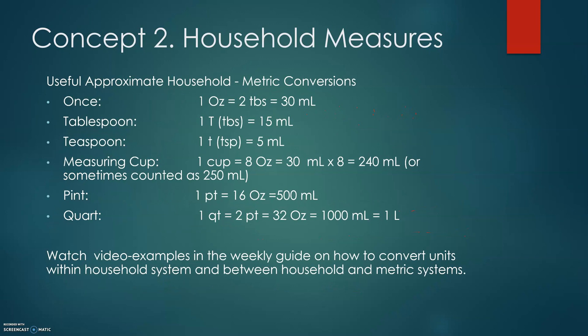Concept number 2: household measurements. Household measurements include spoons such as teaspoon and tablespoon, as well as cup, ounces, pint, and quart — the same units we use at home in the kitchen. There are useful conversions between the household and metric systems, but keep in mind that the household system is approximate, since you cannot measure exact medication amounts with spoons or measuring cups. Therefore, conversions may vary.